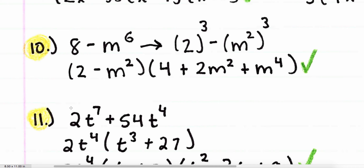Number ten is the difference of cubes. Eight can be written as 2 to the third power, and m to the sixth can be written as m squared to the third power, because 2 times 3 is 6. Pause the video and go to your know-it note to review the difference of cubes formula. Here a is 2 and b is m squared. The form is a minus b times a squared plus ab plus b squared, and that's exactly where all the terms come from. It's all pattern recognition.